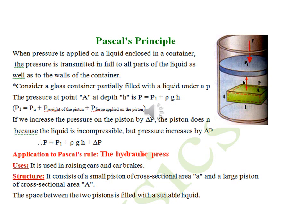The hydraulic press structure consists of a small piston of cross-sectional area a and a large piston of cross-sectional area A. The space between the two pistons is filled with a suitable liquid.